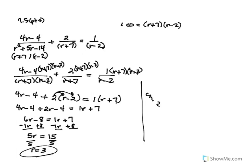You must always check to make sure the solution will not create an undefined outcome. When I look at R equal to 3, I check my denominators. If I substitute 3 in for R, it would not create a 0 anywhere — 3 plus 7, 3 minus 2, 3 plus 7, 3 minus 2 — it never creates a 0. So R equal to 3 is a valid solution to the equation.